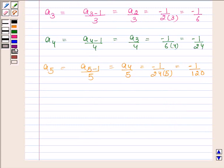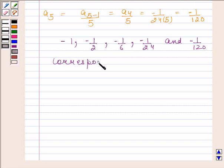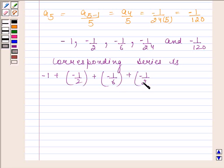Hence, the required first 5 terms of the sequence are -1, -1/2, -1/6, -1/24, and -1/120. And the corresponding series is -1 + (-1/2) + (-1/6) + (-1/24) + (-1/120) + ... and so on.